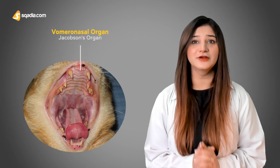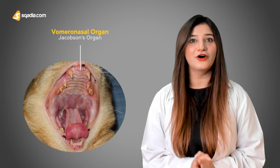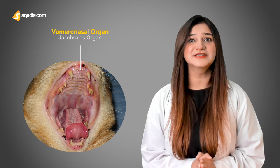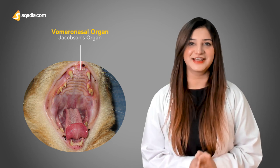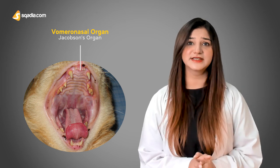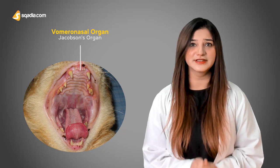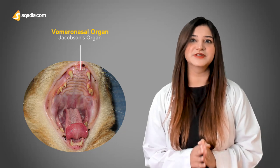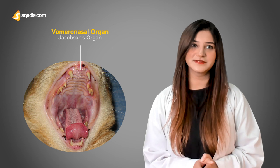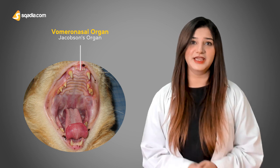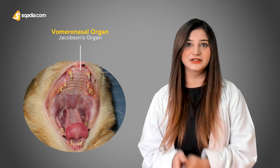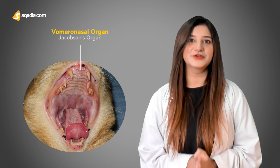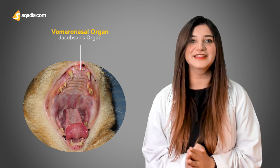Now, let me tell you some interesting facts about the vomer in different animals. There is a small vomeronasal organ, also called Jacobson's organ, present in some animals like cats. It is basically a chemoreceptor organ that plays a part in the perception of certain pheromones. It is named vomeronasal due to its presence close to the vomer and nasal bones.